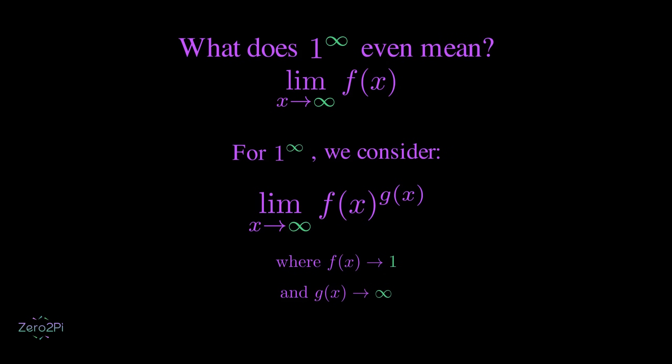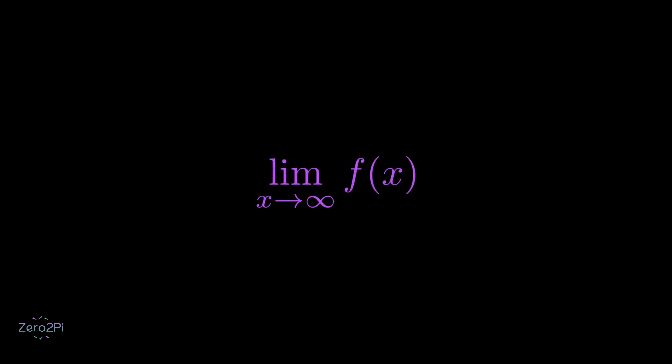Depending on how exactly these functions behave, this limit can land on anything. Let's dig into this further. Imagine we take a function like these two. As x gets bigger and bigger, the base is getting closer to 1, and the exponent is growing toward infinity. So this looks like it's becoming 1 power infinity.